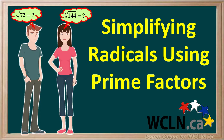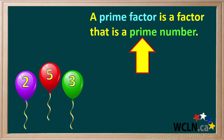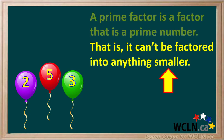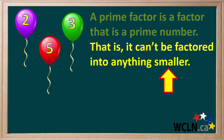If a radicand is not a perfect square or perfect cube, it can often be simplified. Remember, factors are numbers that can be multiplied together to give larger numbers. A prime factor is a factor that is a prime number — that is, it can't be factored into anything smaller.